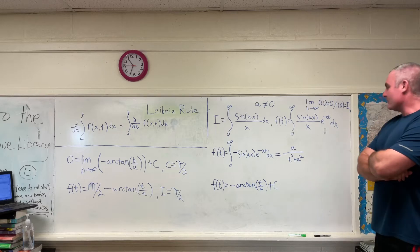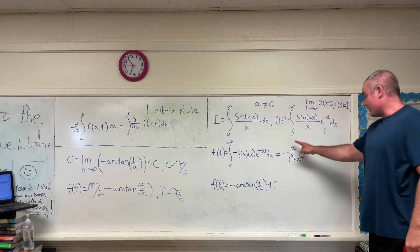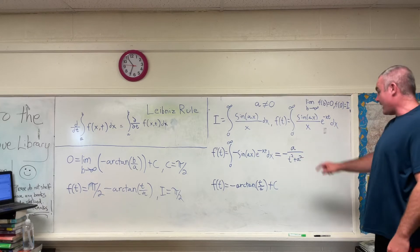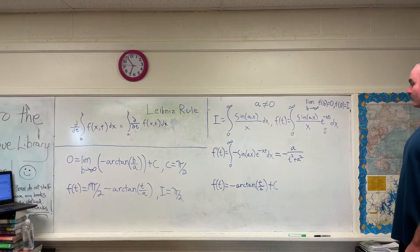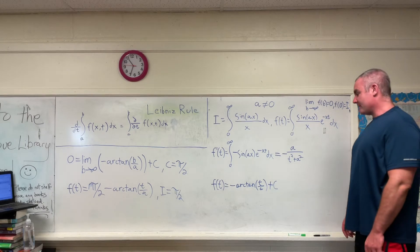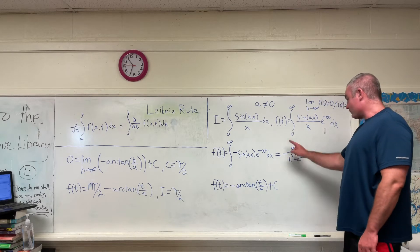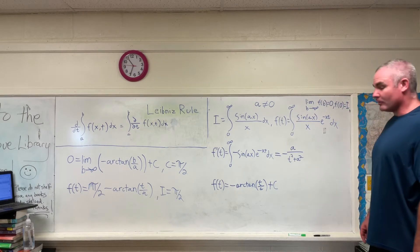But anyway, the final result of evaluating that integral is going to be this right here, negative a over t squared plus a squared. But that's f prime of t. We want f of t. So integrating this right here with respect to t will give us f of t.